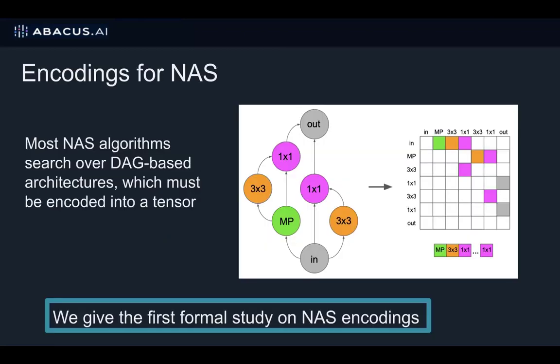Most NAS algorithms search over a set of DAG-based architectures, which must be encoded in some way to be used by the algorithm. A couple of recent works have shown that this encoding can have a large effect on the performance of NAS, and so we give the first formal study on NAS encodings.